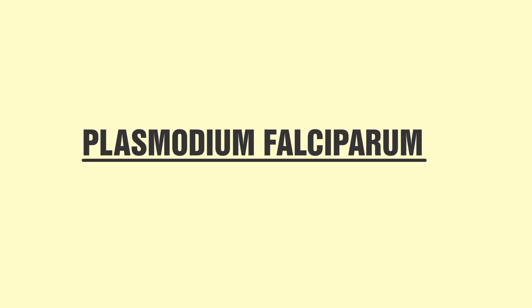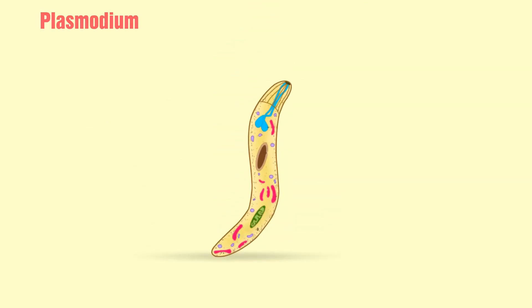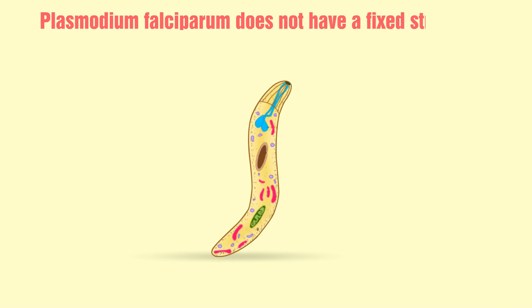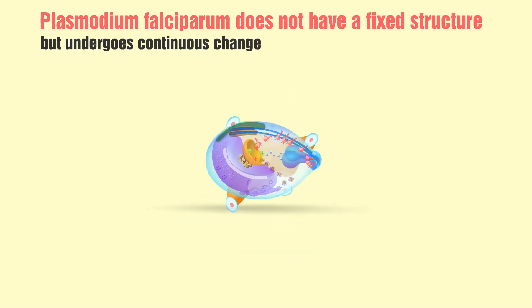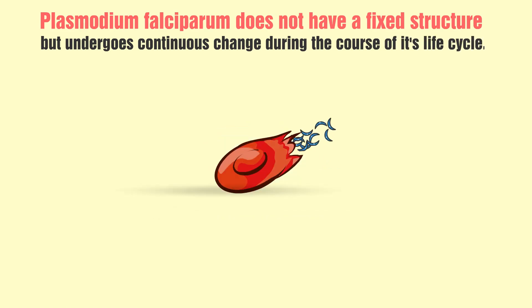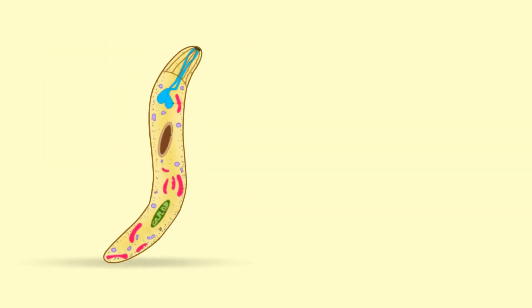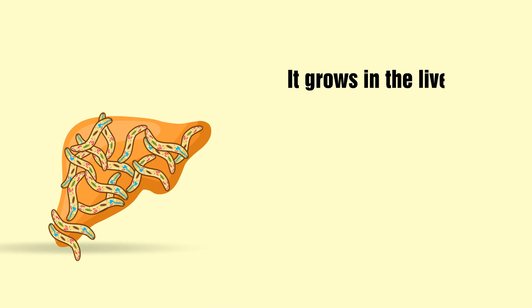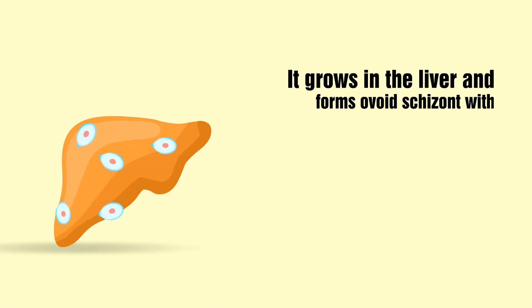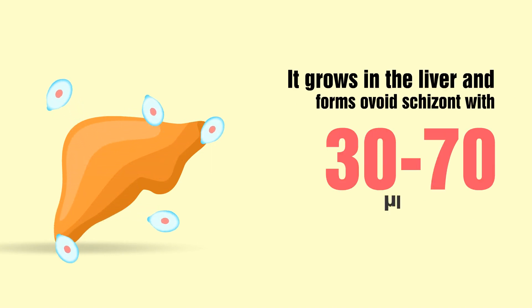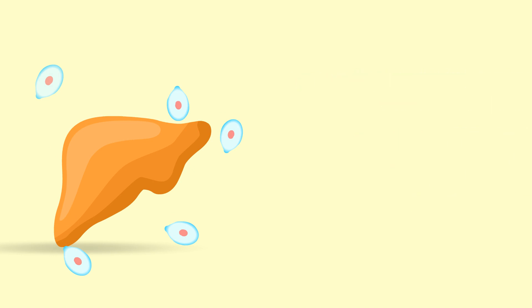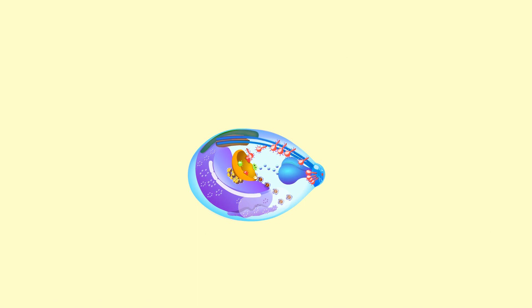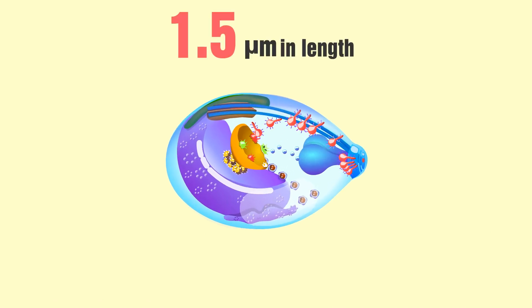Let's study the features of Plasmodium falciparum. Plasmodium falciparum does not have a fixed structure but undergoes continuous change during the course of its life cycle. A sporozoite is spindle-shaped and 10 to 15 micrometers long. It grows in the liver and forms an ovoid schizont with 30 to 70 micrometers in diameter.